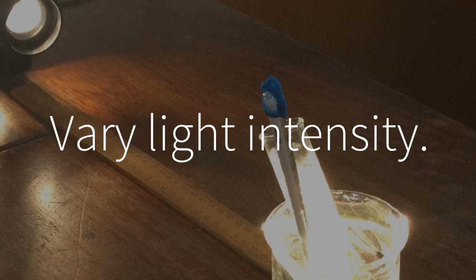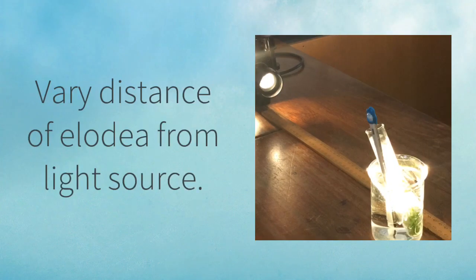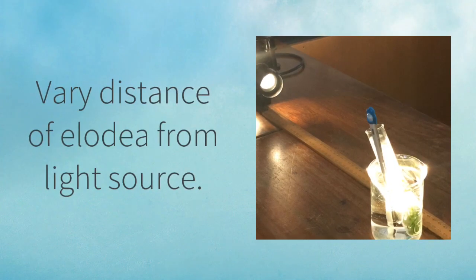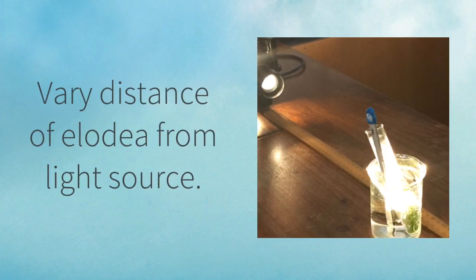Counting the oxygen bubbles enabled us to measure the rate of photosynthesis. We were varying light intensity during this practical. Light intensity was increased by moving the allodea closer towards the lamp.